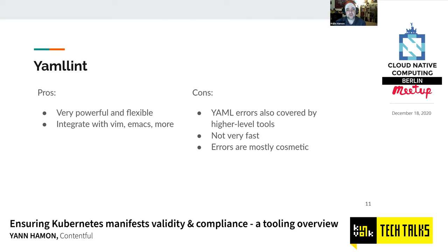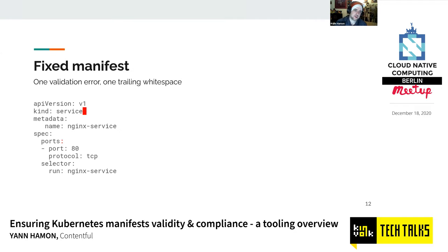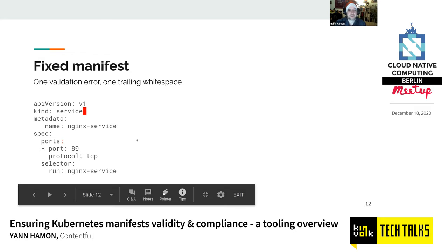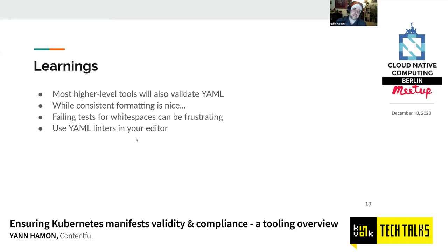Yamllint integrates well with vim and emacs, but YAML errors are usually covered by higher-level tools. It's not super fast, and most errors are cosmetic — it's frustrating to have a CI job fail because of a trailing whitespace. The two errors in our manifest are: a semicolon instead of a colon, and a trailing whitespace. The recommendation is to use linters integrated with your editor rather than failing a CI job later for a misplaced colon.